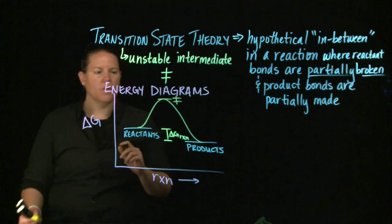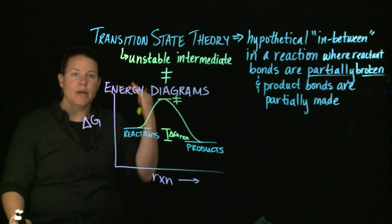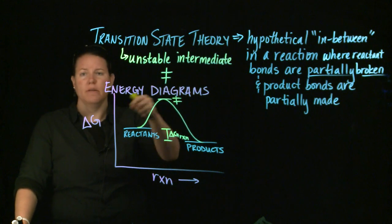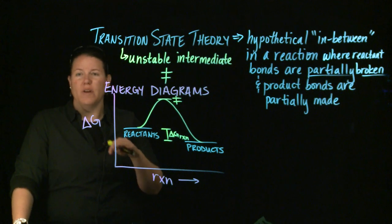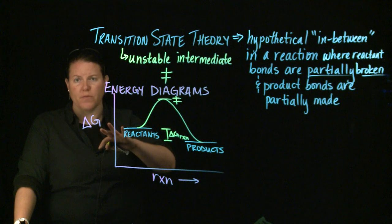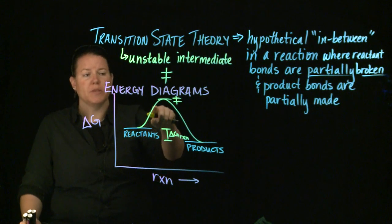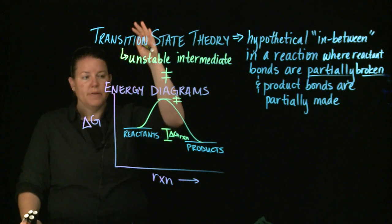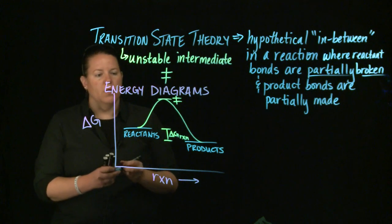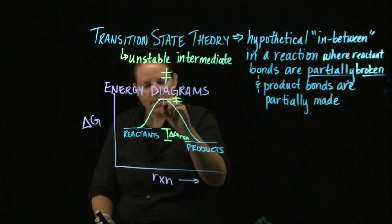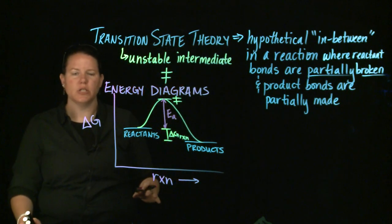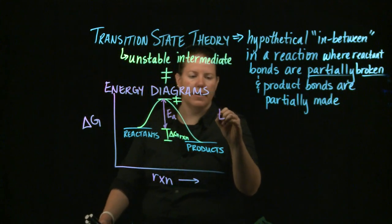It doesn't just go from reactants to products — it actually goes through a transition state, and that transition state is the highest point of the graph. This diagram has to have a high point, and that high point is the transition state. The idea is that all reactions undergo what we'd think of as a roller coaster: you go up, up, up to the top — that's this part — and then as soon as you get to the top, it's a free fall. The amount of energy it took to get to the transition state is called the activation energy.